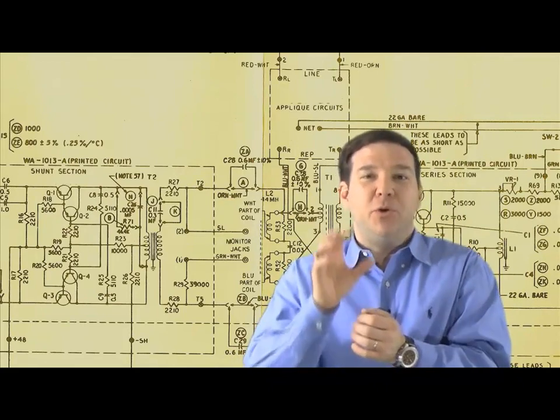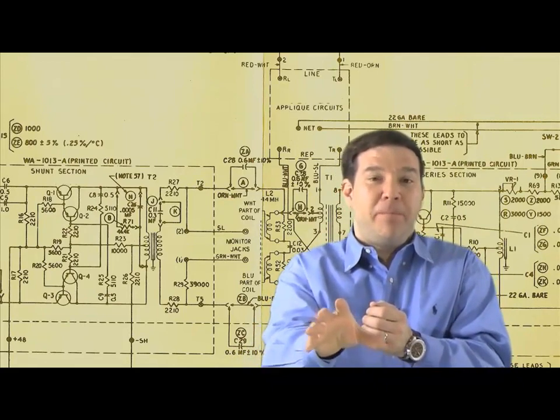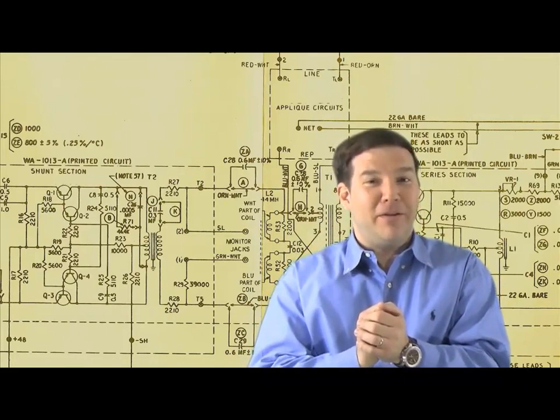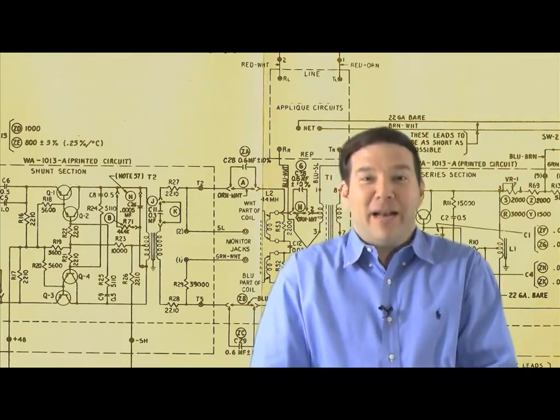This is going to allow, at Layer 2, a switch to intelligently forward traffic. Now, a router at Layer 3 can do some intelligent forwarding of its own. That's the topic of our next video. We'll see you then.